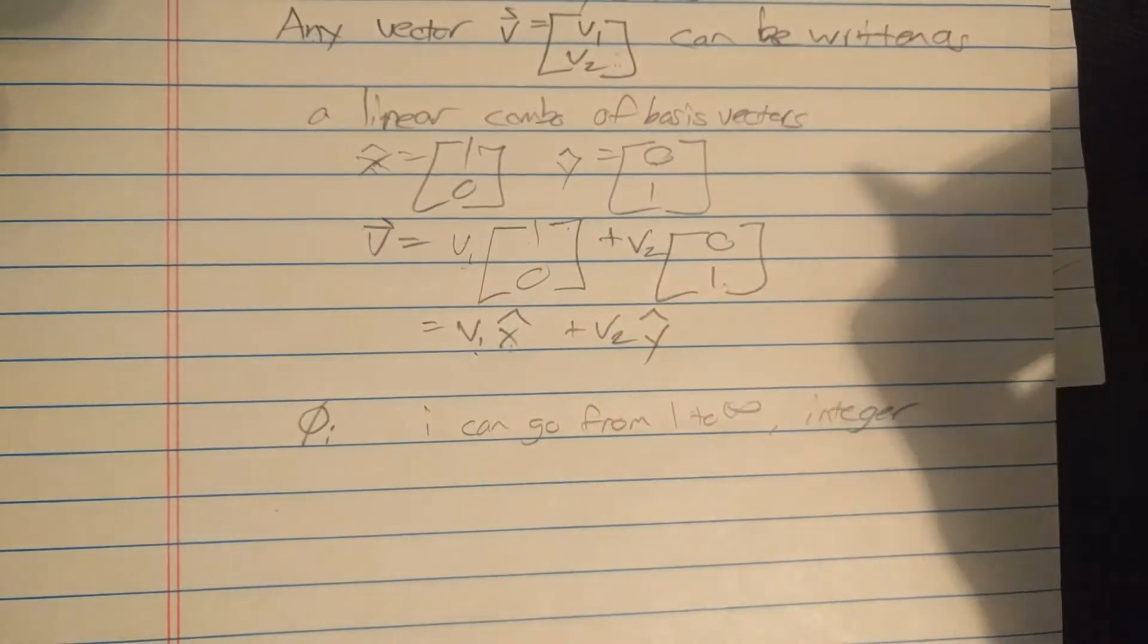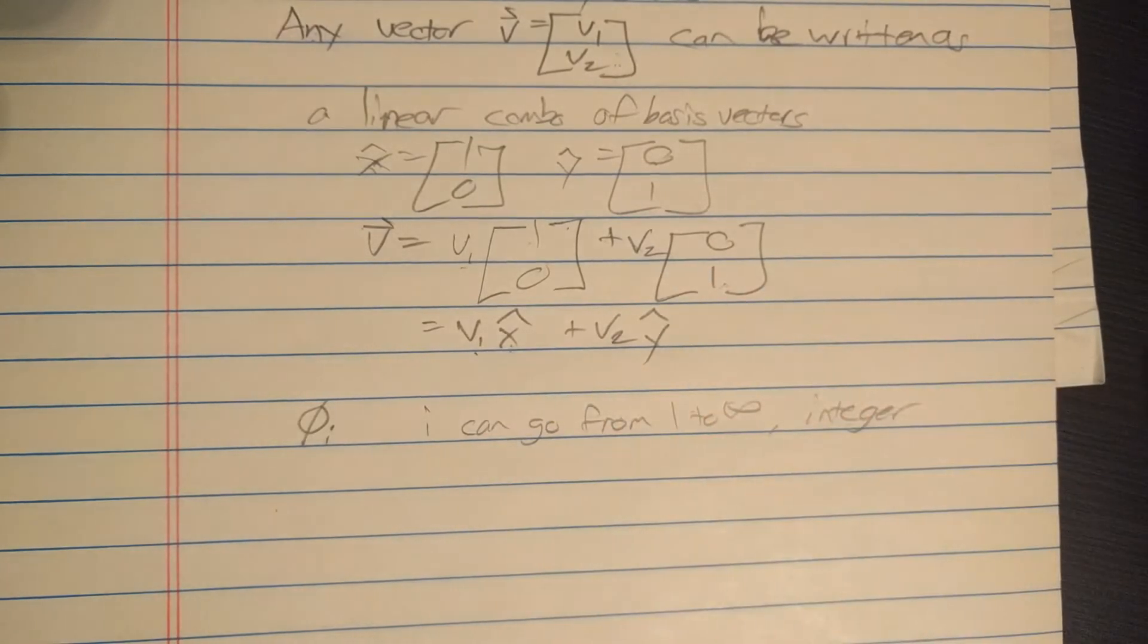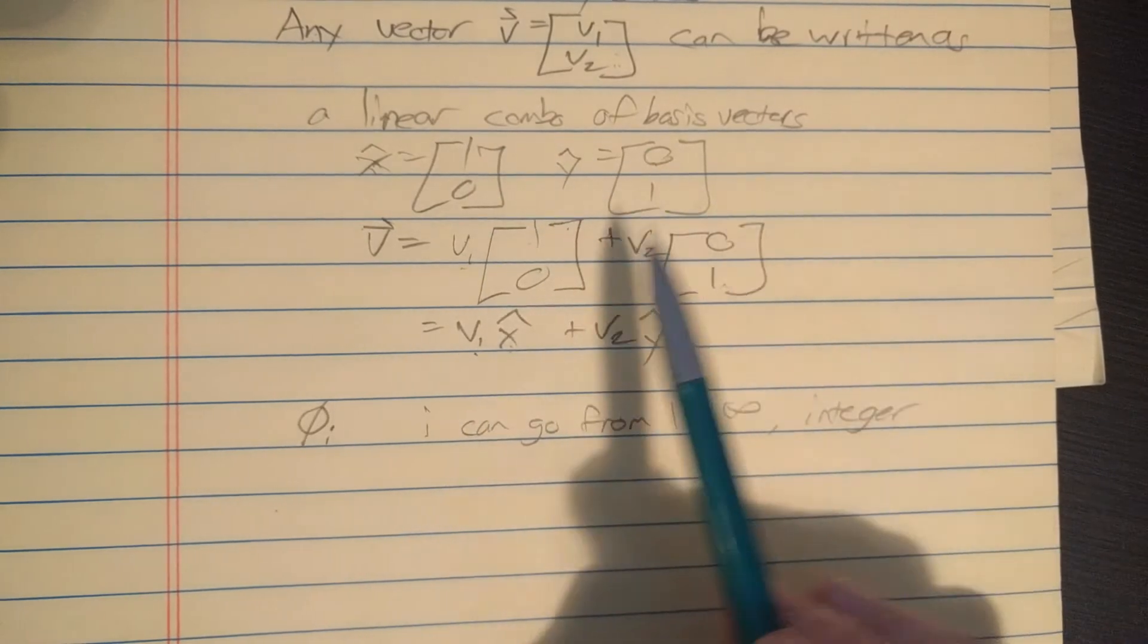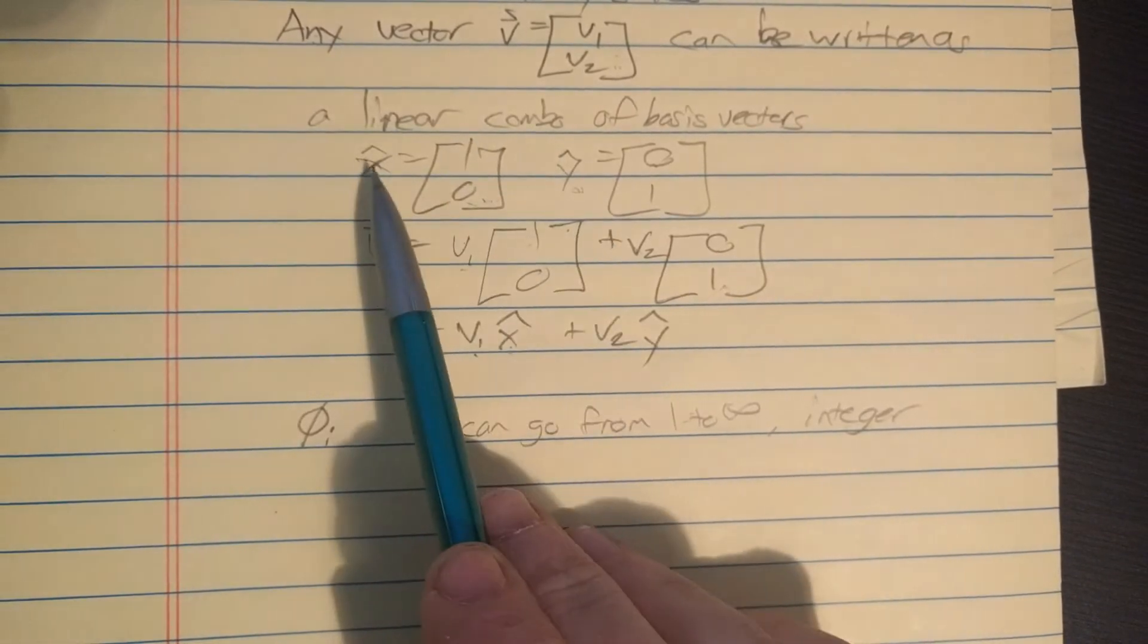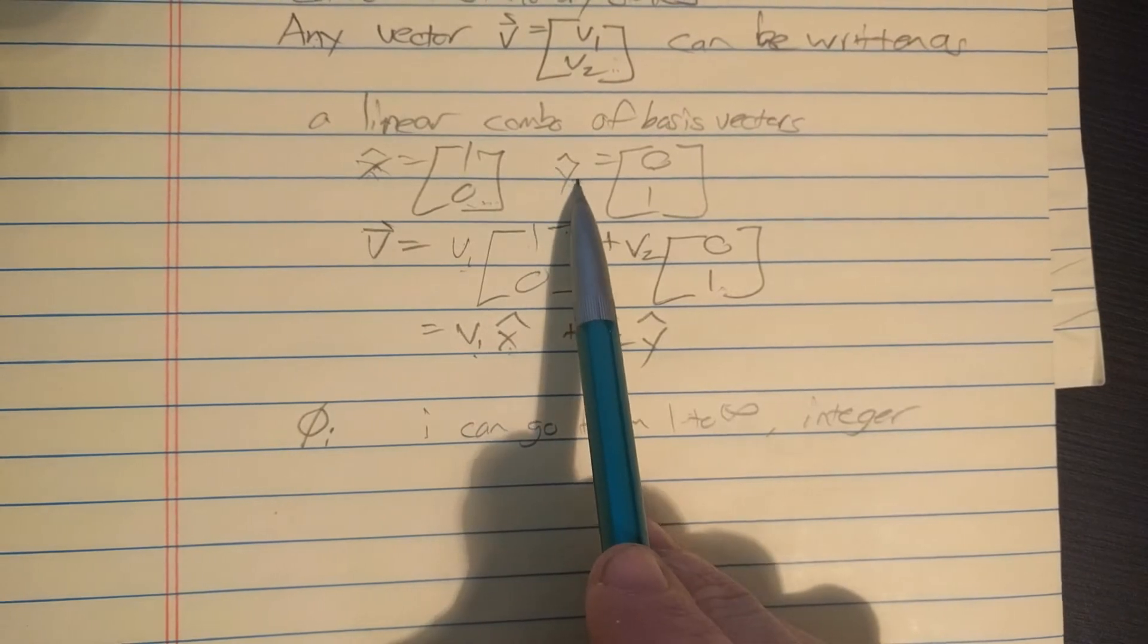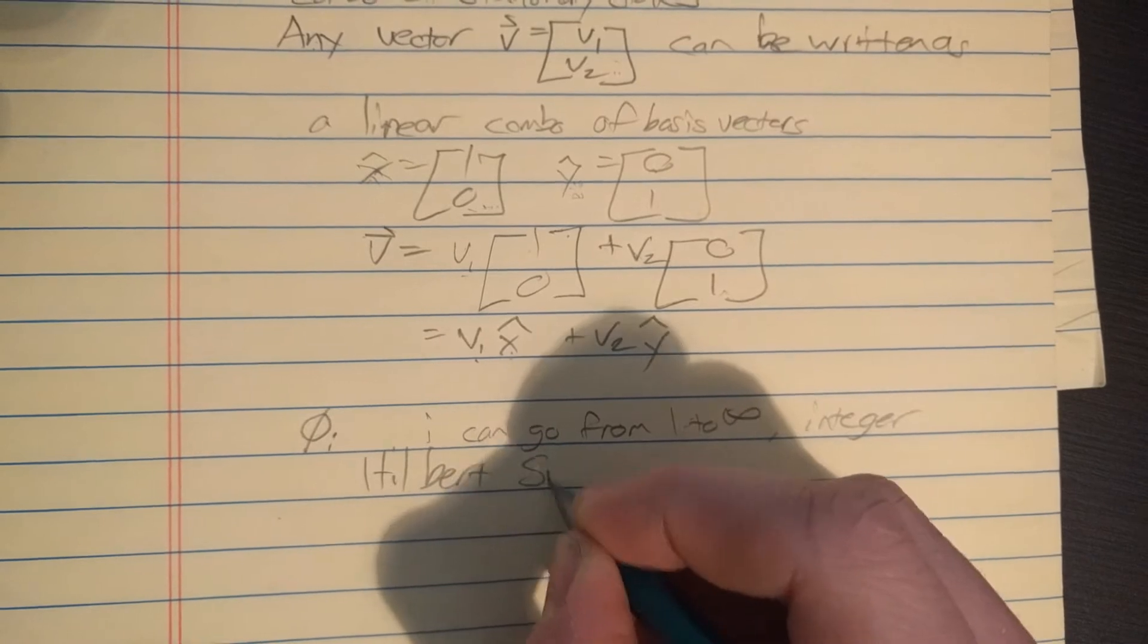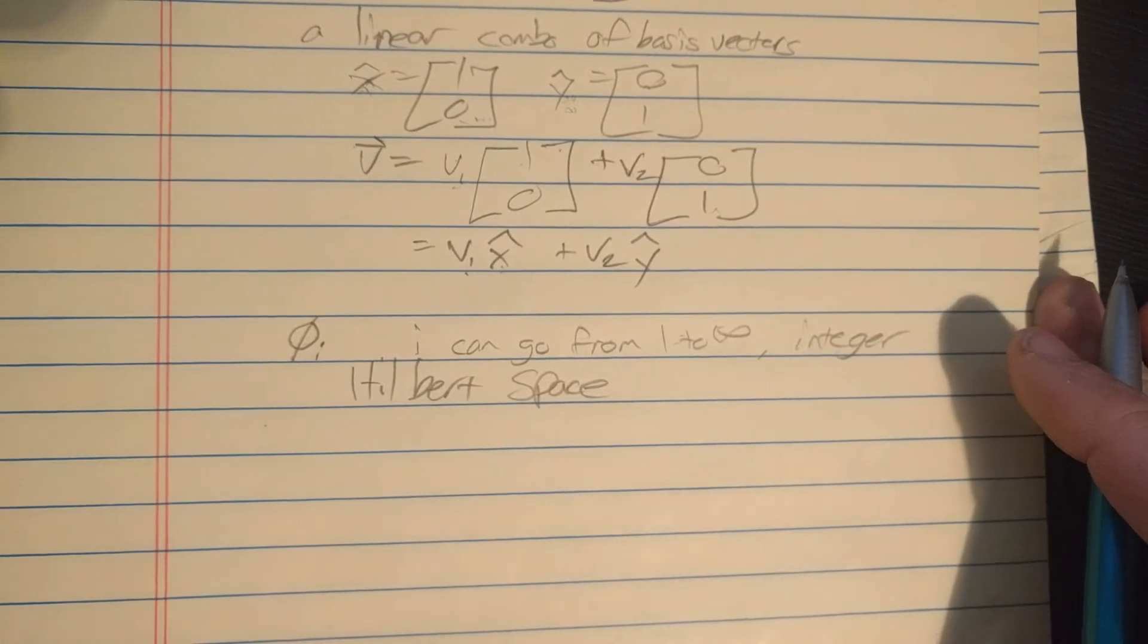In quantum mechanics we would say our space is infinite dimensional - that's why i can go from one to infinity. Up here our space was only two-dimensional, so i could only be one to two. But in quantum mechanics we work in this so-called Hilbert space and it's a sort of infinite vector space.